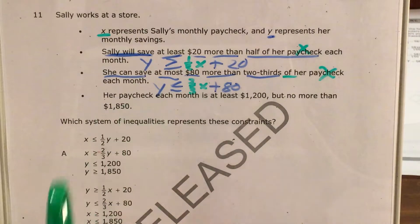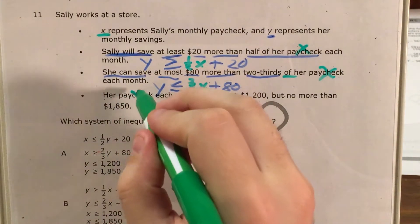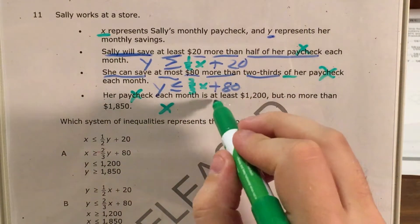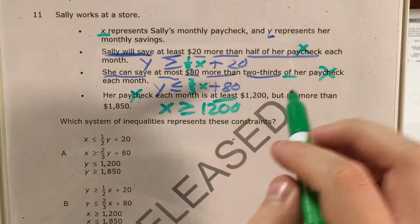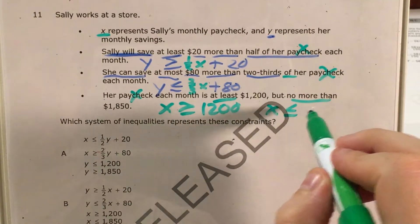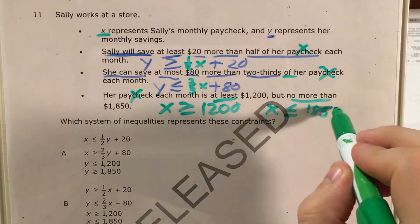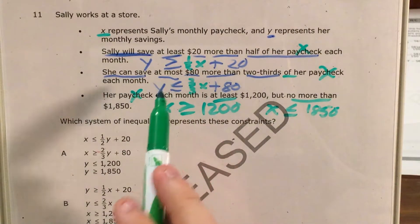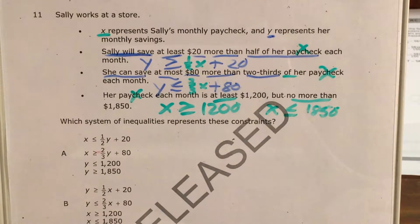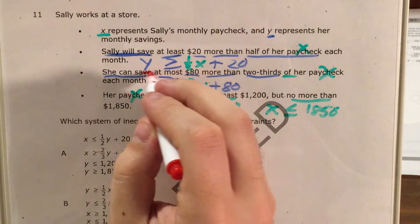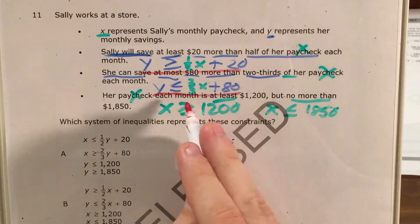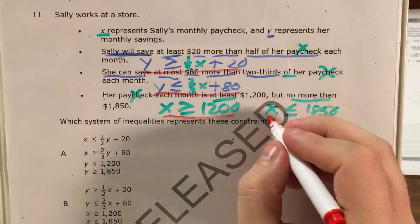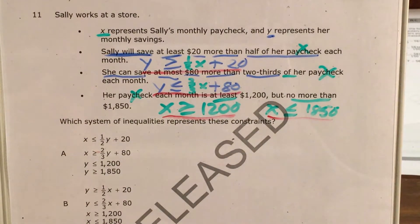So we've taken all the words in this problem and translated them into something mathematical. Now it says her paycheck each month — this is X — is at least, meaning greater than or equal to, one thousand two hundred, but no more than, meaning less than or equal to, one thousand eight hundred fifty.